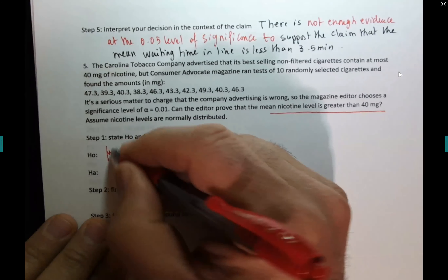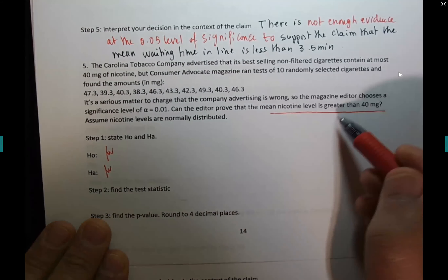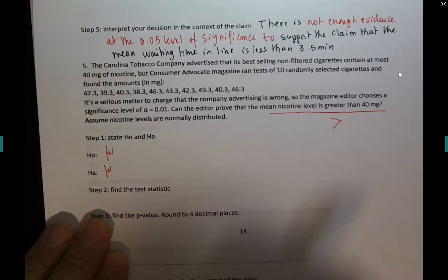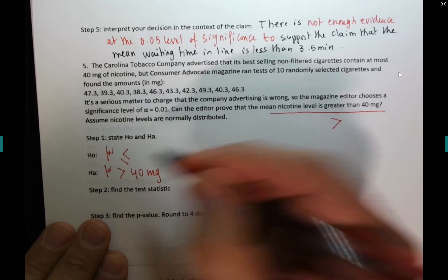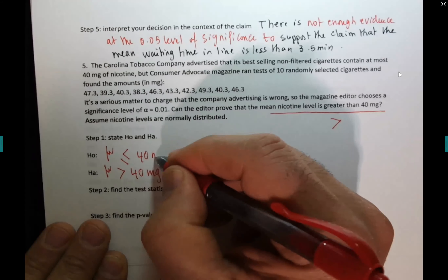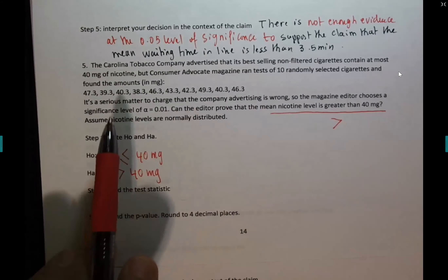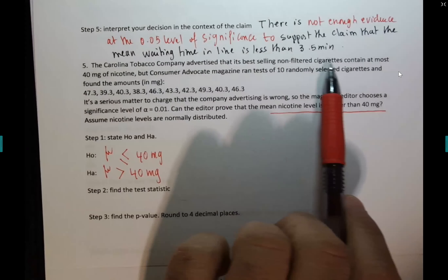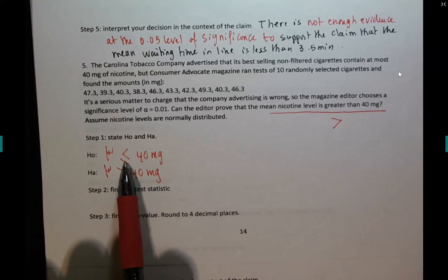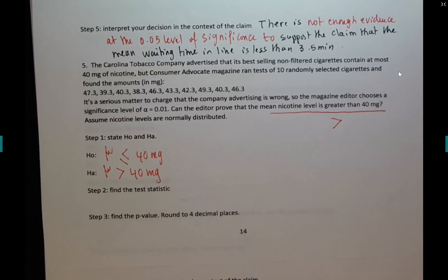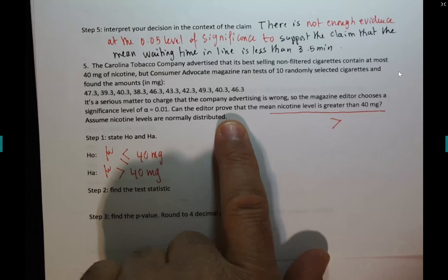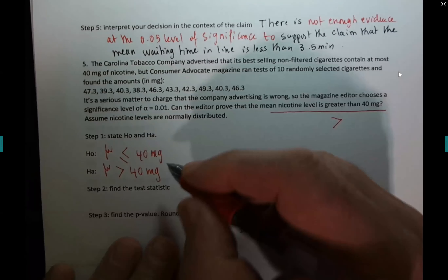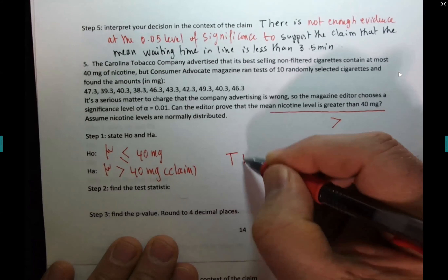The mean — what sign goes? Since it's 'greater than,' this sign goes in HA, and the null is 40. Now some of you might say: the tobacco company says 'at most 40,' which is less than or equal — why isn't the claim in H0? Because the question is from the magazine editor, not the company. The question asks: can the editor prove the mean is greater than 40? So that should be the claim. It's a t-test — it didn't give you sigma.